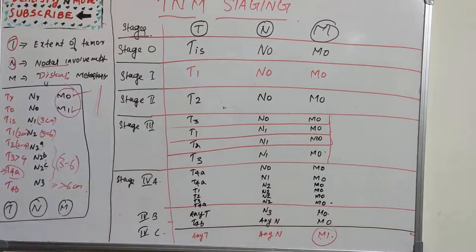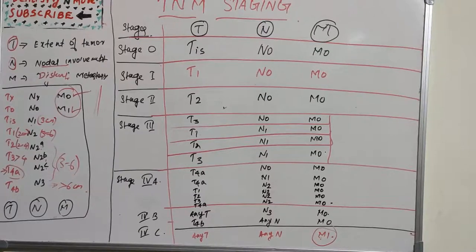Regarding nodal staging, there is observer variability, no inclusion of immunological status, and it gives importance to extra-capsular spread. N2 bilateral involvement has better prognosis than N3 with large nodes greater than 6 centimeters—that is a limitation.